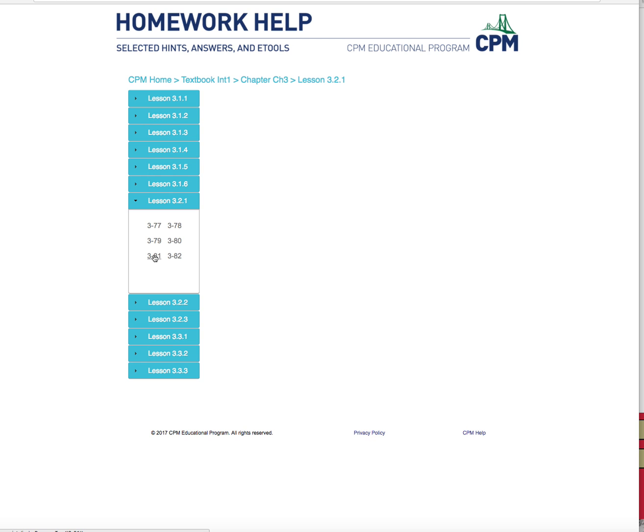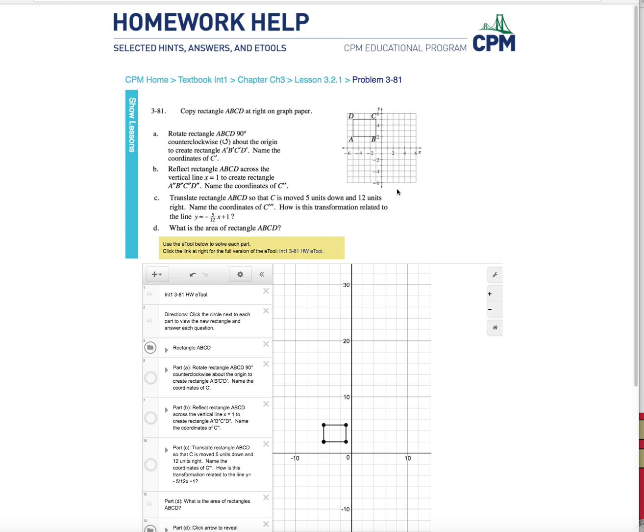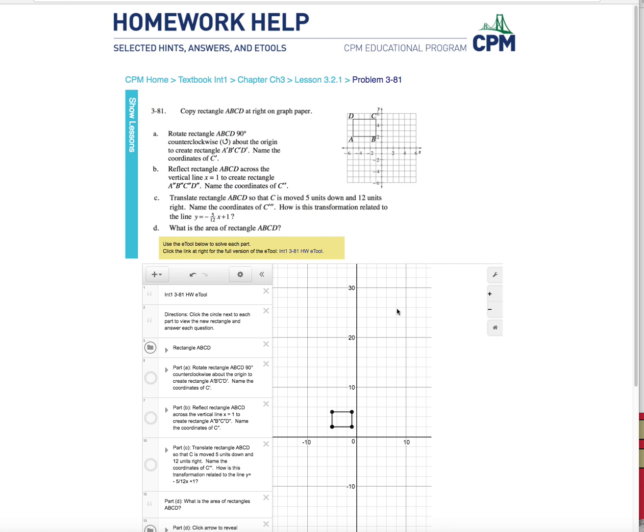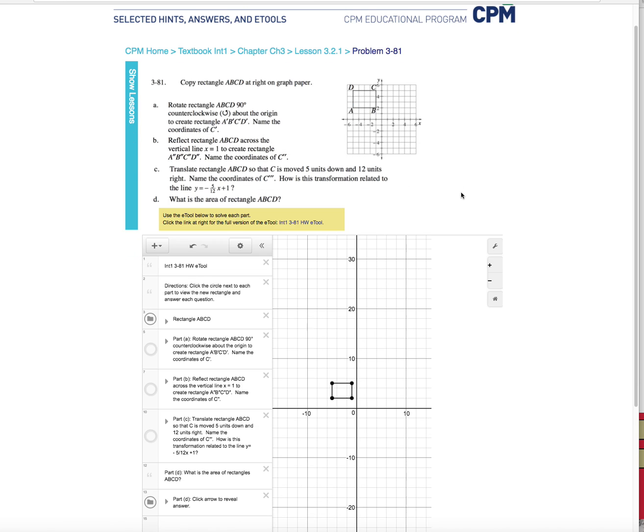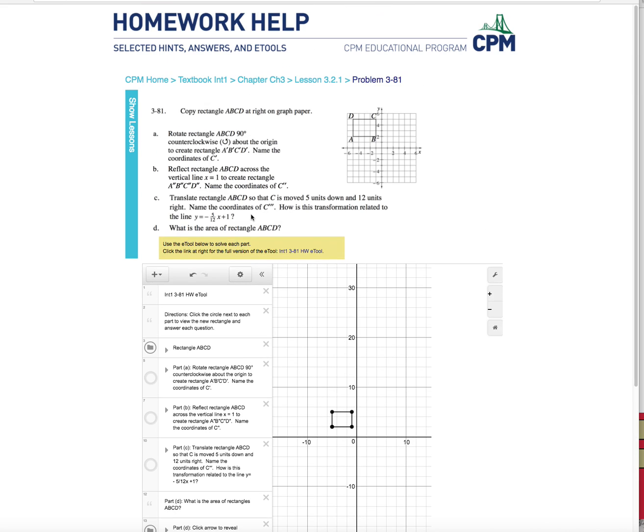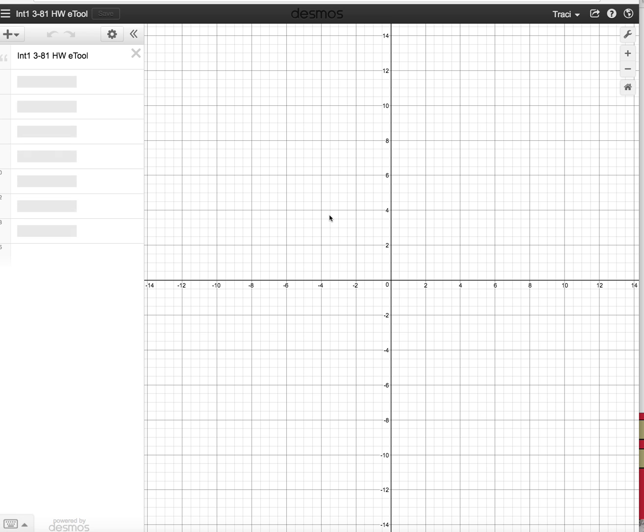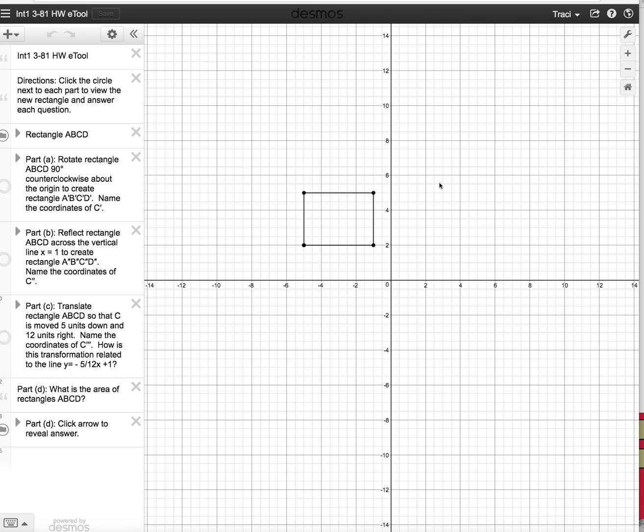So say you want to check also problem 81. You can see on here there's an e-tool to help you with that. So the e-tool can help you answer these questions right here as you're going through. So you can use the e-tool to solve each part and it's an interactive web tool. If you want the full version, you can go ahead and click on this e-tool and it will bring you up to Desmos and give you a full screen to help check your answer on that.